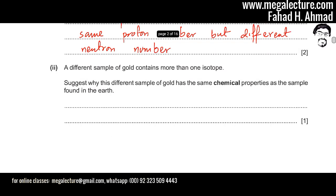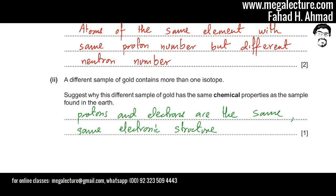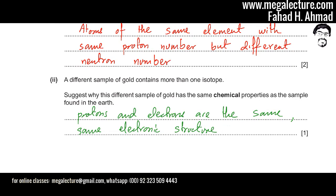A different sample of gold contains more than one isotope. The reason different isotopes have the same chemical properties is that, by definition, isotopes have the same number of protons and electrons, so they share the same electronic structure and react in exactly the same way. Neutrons are neutral — they don't attract or repel — so changing the number of neutrons does not affect the chemical properties of an element.